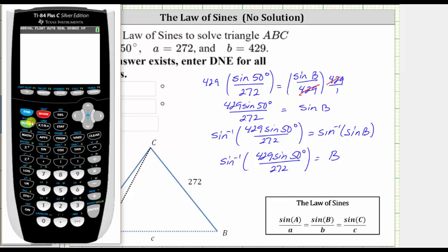Now we enter inverse sine by pressing second sine. To enter this quotient, we need the numerator in parentheses. So we have open parenthesis 429 sine 50 degrees, close parenthesis for the sine function, close parenthesis for the numerator, and then divide it by 272. Close parenthesis for the inverse sine function, and enter.